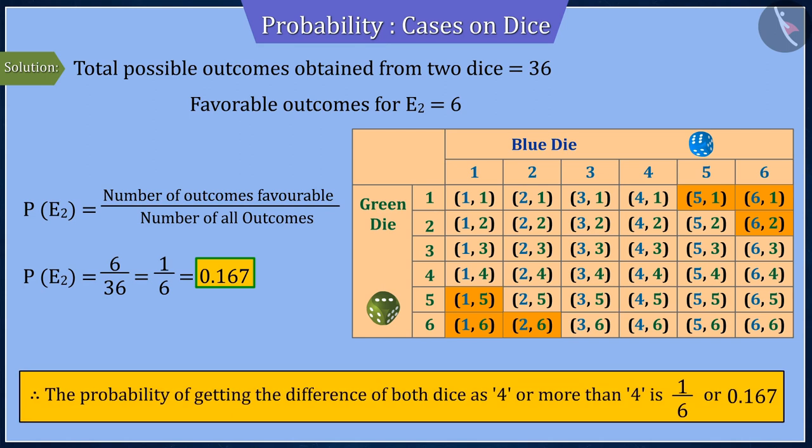Hence, we can say that the probability of the difference between the numbers appearing on the dice being 4 or more is 0.167.